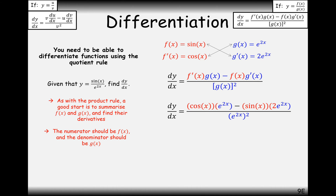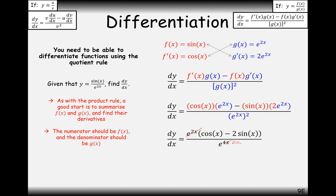Substituting everything in, you get e^(2x) factorised out, giving e^(2x) · (cos x − 2 sin x) all over e^(4x). You can then cancel e^(2x) from the numerator and denominator, leaving (cos x − 2 sin x) over e^(2x) as your final answer.